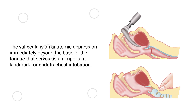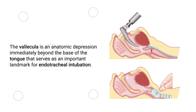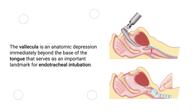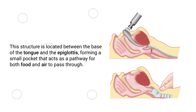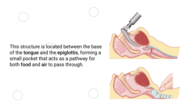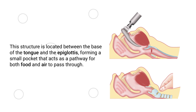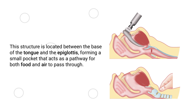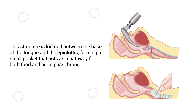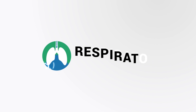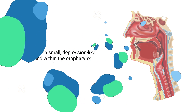The vallecula is an anatomic depression immediately beyond the base of the tongue that serves as an important landmark for endotracheal intubation. This structure is located between the base of the tongue and the epiglottis, forming a small pocket that acts as a pathway for both food and air to pass through. We created this video to cover the medical definition and provide a brief overview of this topic.